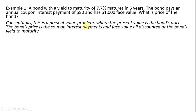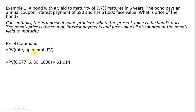Conceptually this is a present value problem where the present value is the bond's price. The bond's price is the coupon interest payments and face value all discounted back at the bond's yield to maturity, the 7.7 percent. In Excel we're going to use the present value command, and it's going to be a function of several things. The rate is going to be the yield to maturity, the 7.7 percent, entered as a decimal.